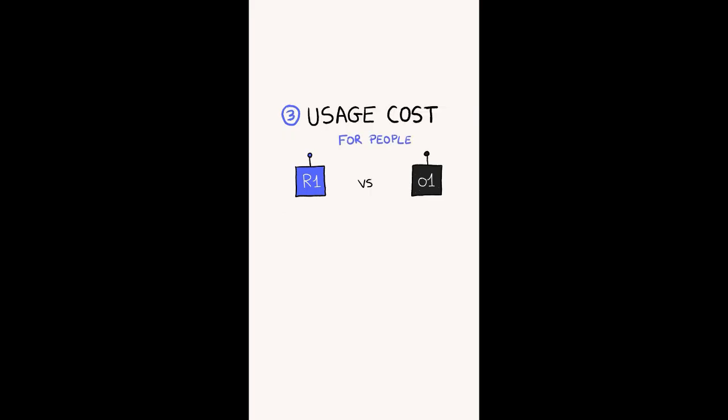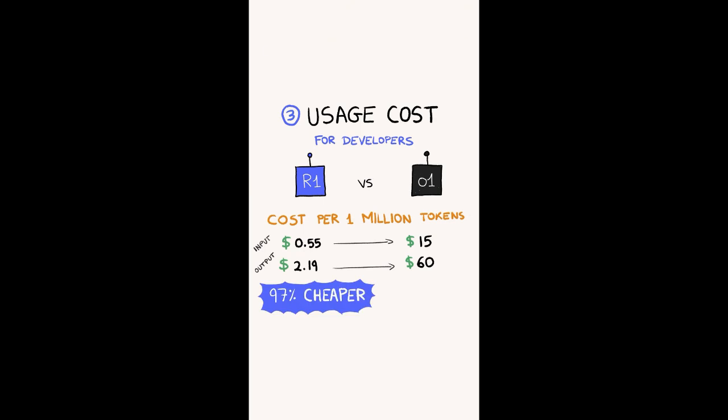R1 is also significantly cheaper to use. You can use R1 for free because it's open source, but you need to pay $200 a month to use O1. R1 is also cheaper for developers and businesses, with their API pricing being 97% cheaper than O1.